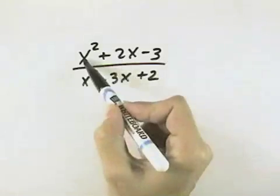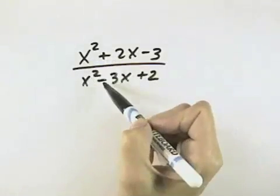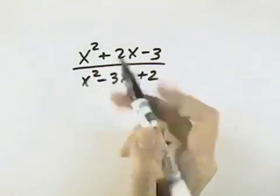In other words, we cannot cancel the x squareds because they're separated by addition and subtraction. That means they're terms, not factors.